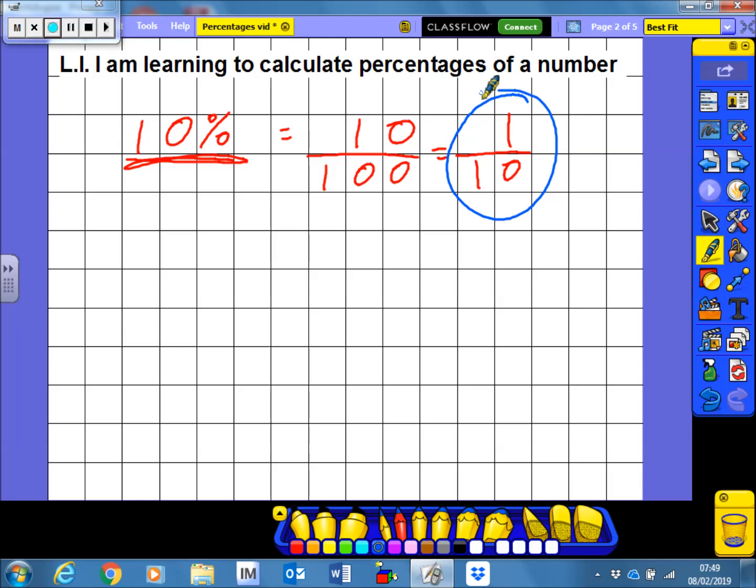How do we work out a tenth of something? We just divide by 10, which is really easy to do. It's just moving columns up and down. There's a video on that as well on this channel. But dividing by 10, one of the easiest skills in maths. It's really simple to do. So because working out how to divide by 10 is so easy, it means working out 10% is really easy.